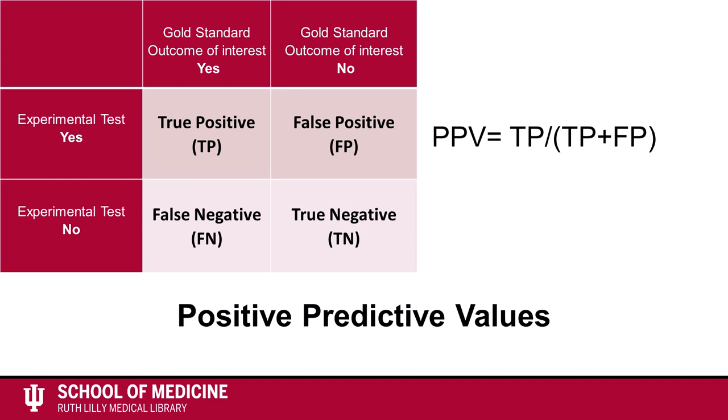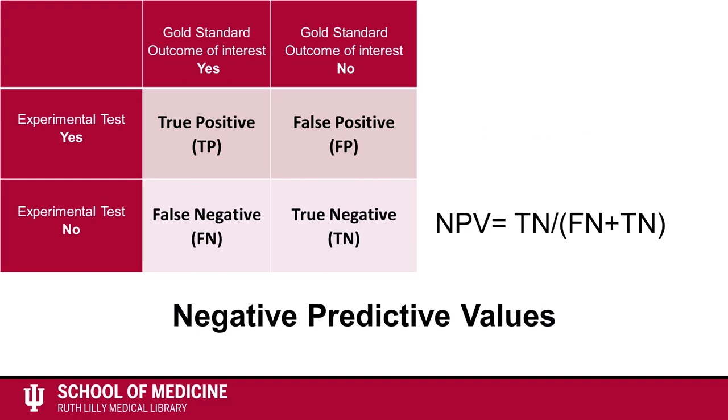To calculate the negative predictive value, divide the number of true negatives by the number of all negative tests — so true negatives divided by true negatives plus false negatives. Essentially, this is the percentage of people who are truly negative for the outcome of interest out of all of the people who tested negative.